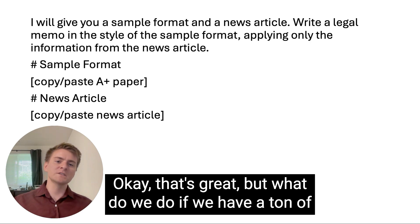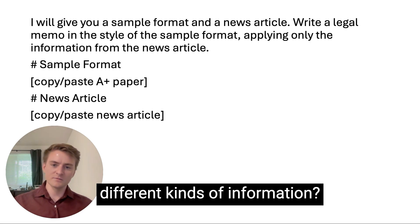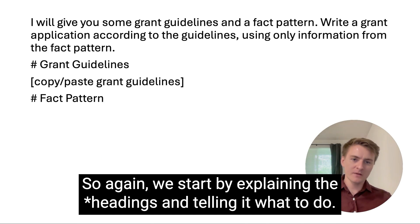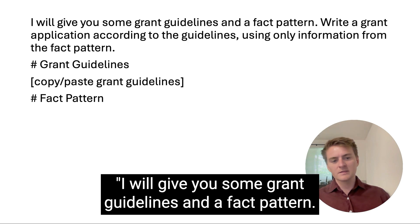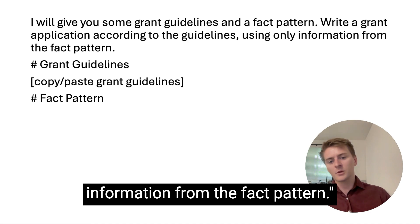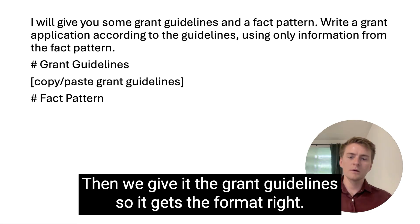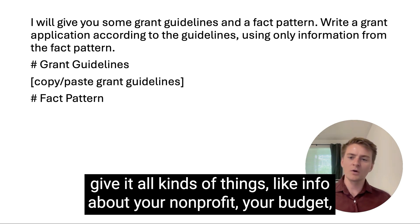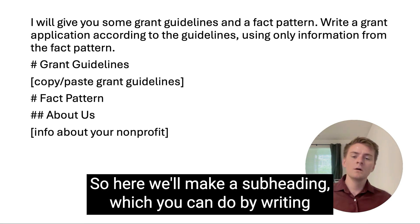But what do we do if we have a ton of different kinds of information? Let's write a grant application as an example. We start by explaining the headings and telling it what to do: 'I will give you some grant guidelines and a fact pattern. Write a grant application according to the guidelines using only information from the fact pattern.' Then we give it the grant guidelines so it gets the format right. Now we'll make a heading that says 'fact pattern,' but we have to give it all kinds of things like info about your non-profit, your budget, and what you'll do with the money.